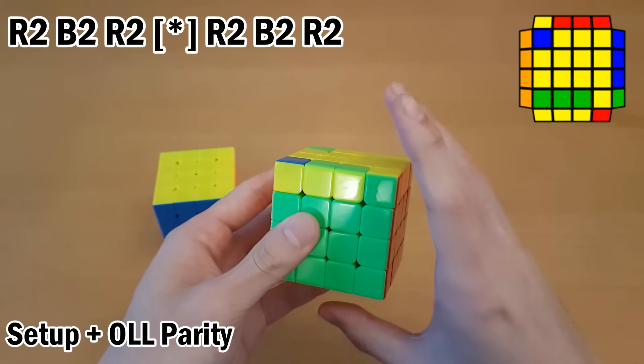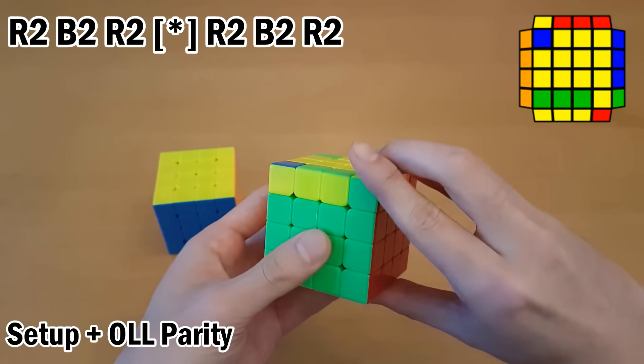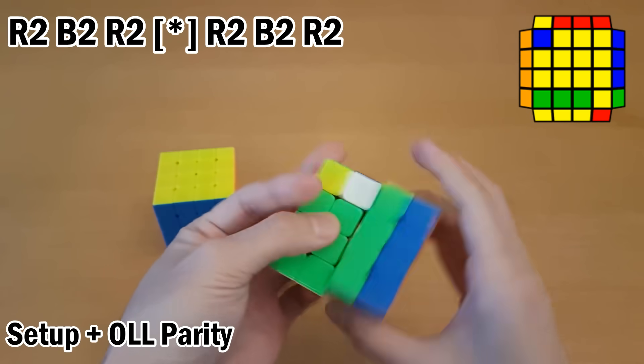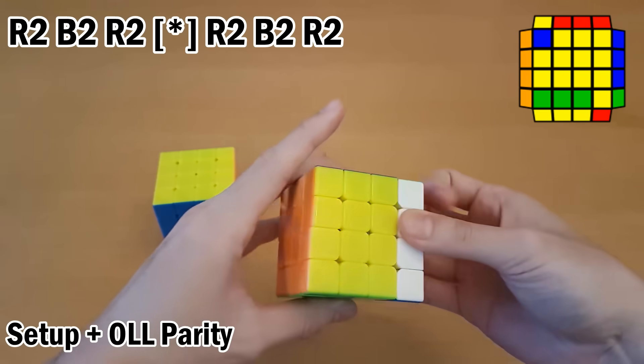For this case, you do it differently. You start by re-gripping to start OLL Parity as well, but then you do R2 B2 R2 from the top like that, then Parity, and then R2 B2 R2.